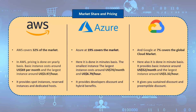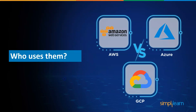Google offers quite assorted pricing compared to the other two. It gives sustained use discounts which activate if you use the same instance for a month, as well as preemptible instances, which are very similar to Amazon spot instances. One thing is common to all three cloud services: they all offer long-term discounts.